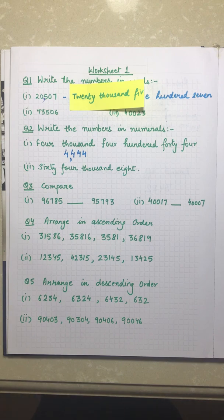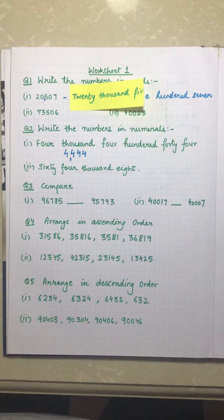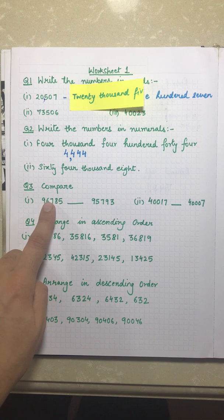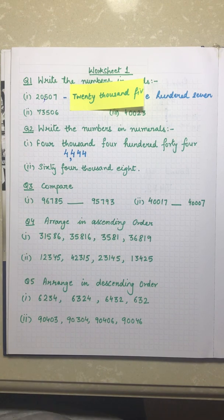Let's come to question number three, part one, which says compare and put a sign of greater than or less than. To decide which number is bigger, we first look at the number of digits. Both numbers have one, two, three, four, five digits — both are the same. Now we look at the first digit from the left.